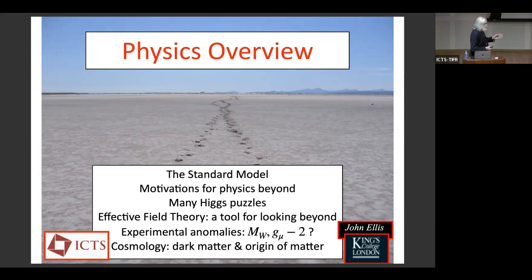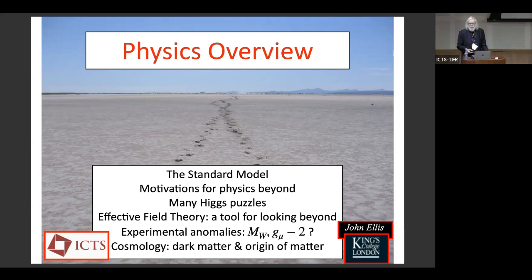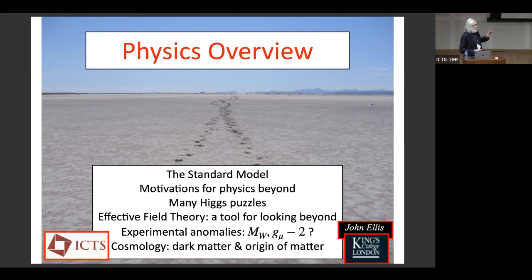How are we going to look for this new physics? You can look directly for new particles or interactions, or you can look indirectly. A very promising technique at the present time is effective field theory, where you look for low-energy manifestations of physics which may eventually appear at higher energies. We shouldn't forget that there are some experimental anomalies in the present data — namely the value of the W mass reported by CDF and the anomalous magnetic moment of the muon.